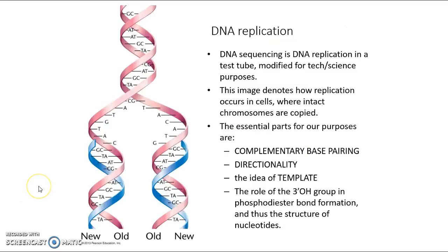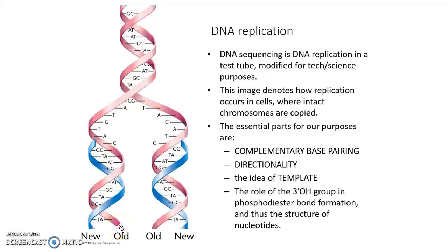Before we can talk about sequencing, you need the basics of DNA replication. A double-stranded DNA molecule as found in a chromosome has two strands base-paired together following complementary base pairing rules: A's with T's and G's with C's. The orientations of these strands matter — if one end is the five prime end, the other is the three prime end. Every strand can only base pair with something that is both complementary and anti-parallel.